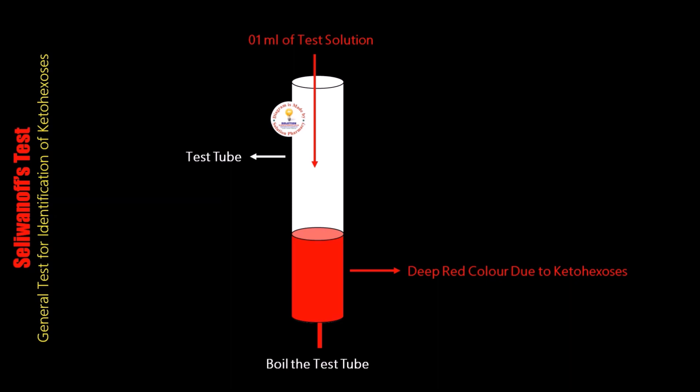By this test we can differentiate fructose and glucose. Fructose is a ketose — meaning the ketone functional group is present — while glucose is an aldose — meaning the aldehyde functional group is present. Fructose shows Selivanov's test positive, and glucose shows a negative result with Selivanov's test. So this is all about Selivanov's test. Thank you very much for watching this video.